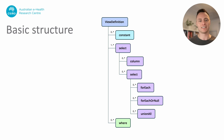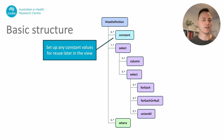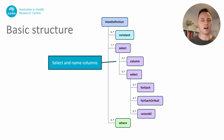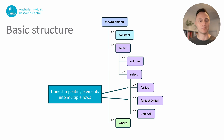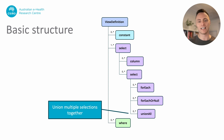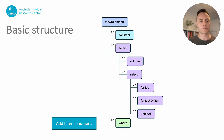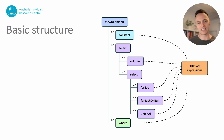This is the basic structure of a SQL on FHIR view definition. You can define constant values that you can refer to later in the view. You can define and name any number of columns to extract from your FHIR data. In the case of repeating elements, you have control over how these get expanded into rows. You can union multiple selections together, which can be useful for putting data from different parts of a FHIR resource into a common set of columns. And finally, you can add filter conditions, which define which FHIR resource instances will be included in the view.